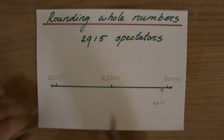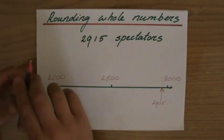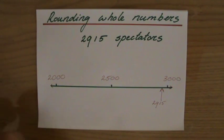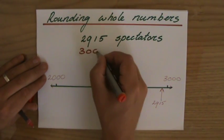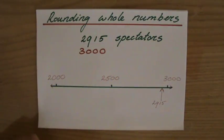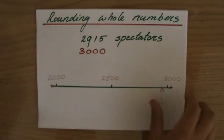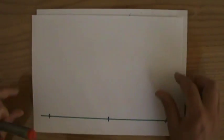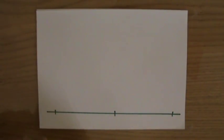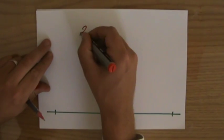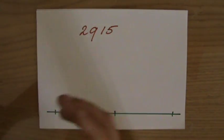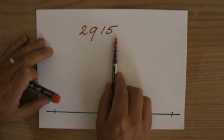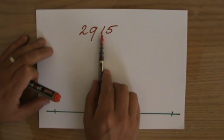That's correcting to the nearest 1,000. So the answer to the nearest 1,000 would be 3,000. Now, let's say in a different situation, they're asking me, now we want to correct it to the nearest 100. So I draw a new number line, and I'll write down, so it was 2,915. And to the nearest 100. Now, what are my hundreds? Units, tens, hundreds.